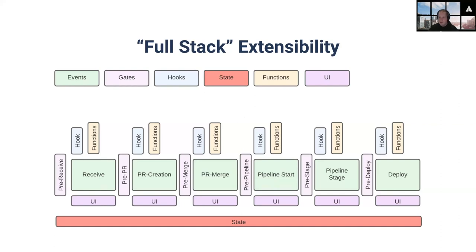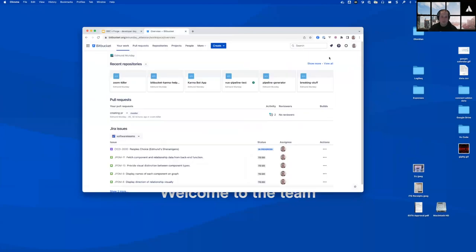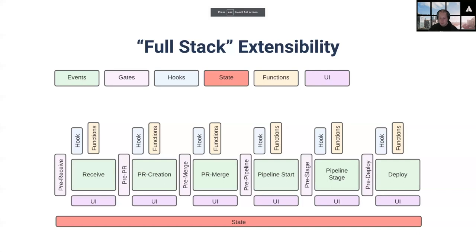Functions are a core part of the Forge capability — the ability to run your own code hosted in the Forge platform and execute logic defined by you as a customer or partner. State gives you the ability to store data and share it across the workflow. UI extensibility allows you to add your own front-end functionality into the product as well.